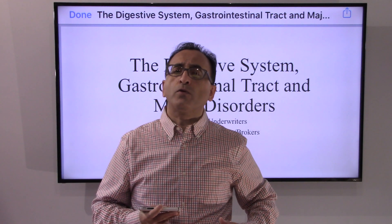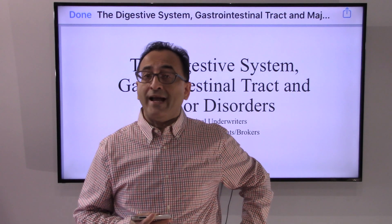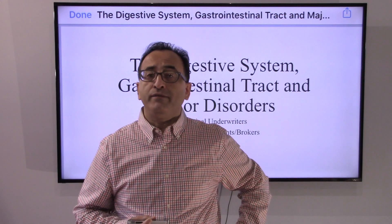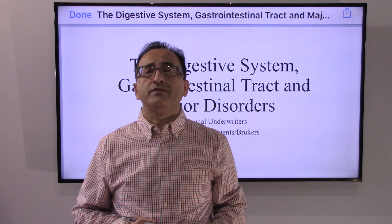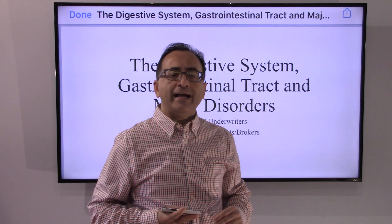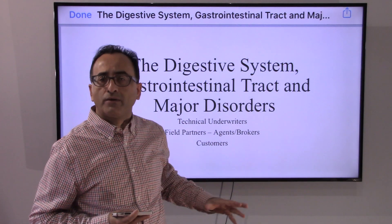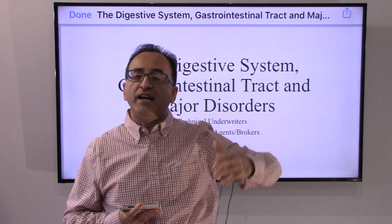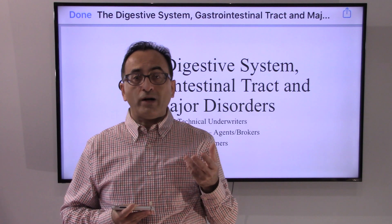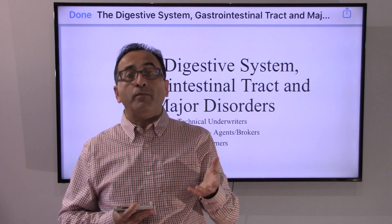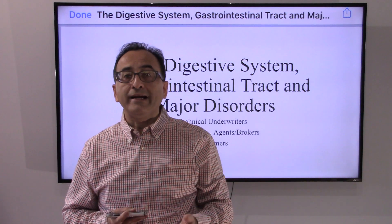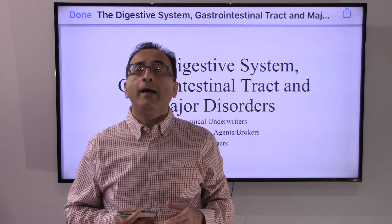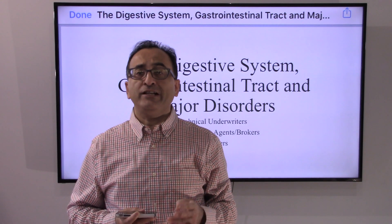Now when I say ulcerative colitis, those of you who may not have the medical background or familiarity with anatomy and physiology may not understand what ulcerative colitis is. So I thought let me put this presentation together, because in order to understand ulcerative colitis, we need to look at the GI tract from mouth to anus — what happens in the colon, ulcer plus inflammation of the colon — to better correlate and understand the big picture. I did a lot of research and reading.